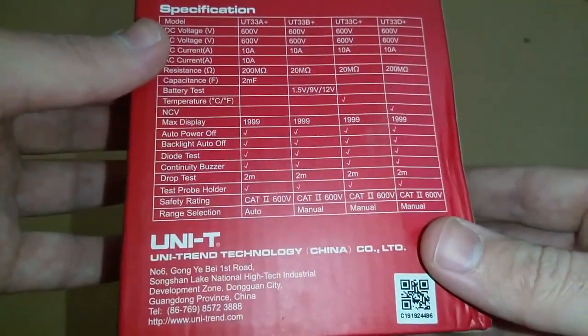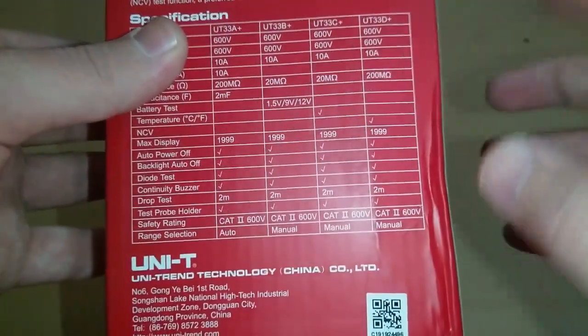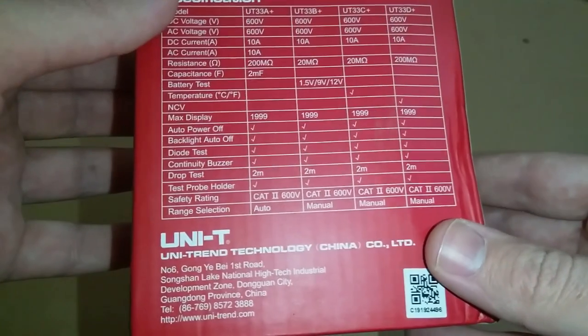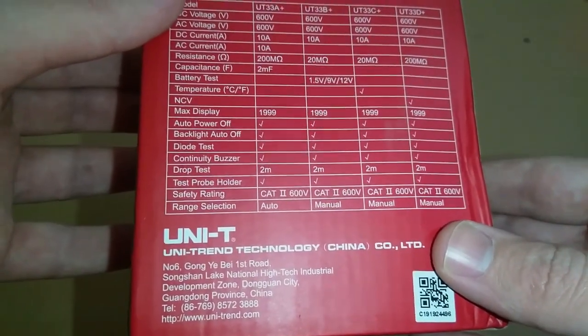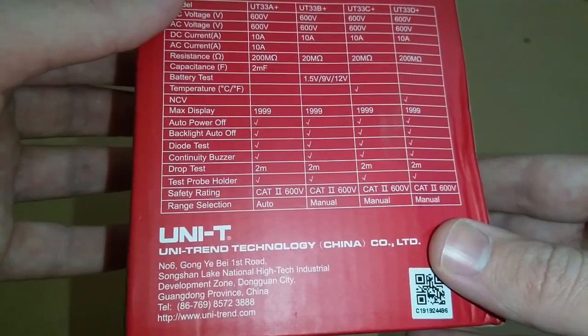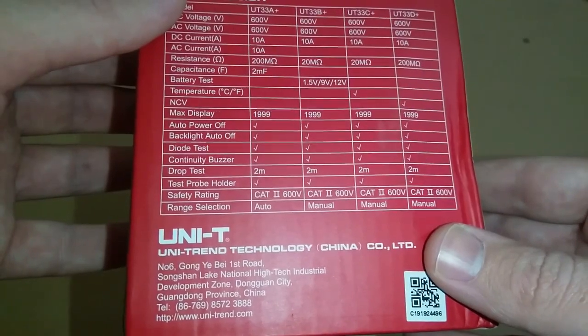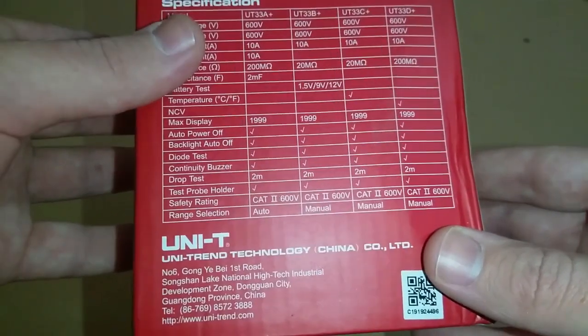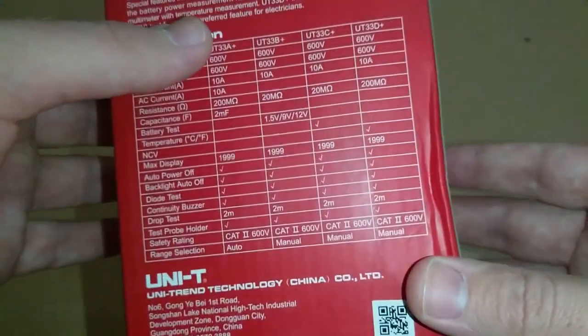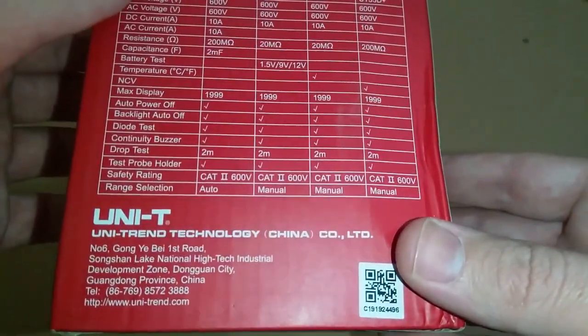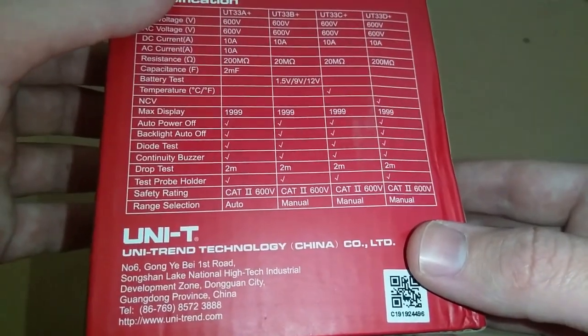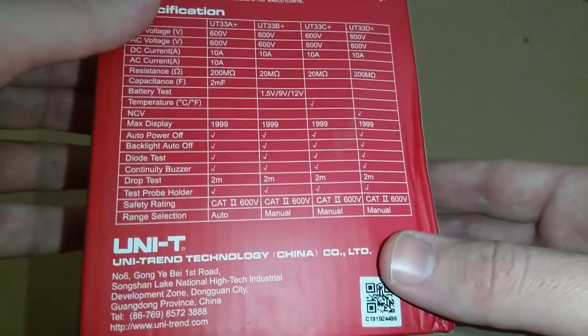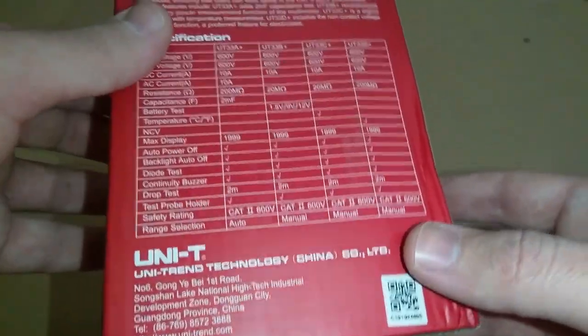Maximum display of 199 digits, it means that it can measure value up to 1,999 and auto power off function is available, backlight, auto off, diode test, continuity buzzer, drop test. It is tested by dropping from 2 meters and test probe holder and safety rating and manual range selection is available.